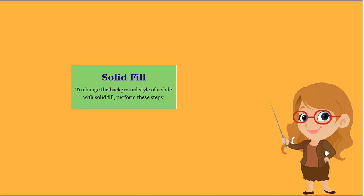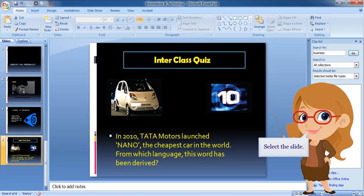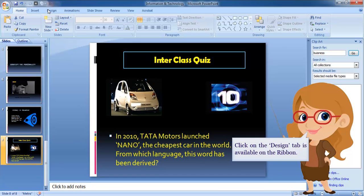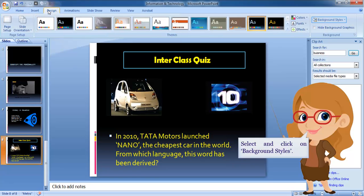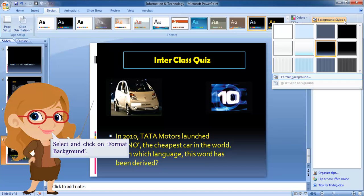Solid fill. To change the background style of a slide with solid fill, perform these steps. Select the slide. Click on the Design tab available on the ribbon. Select and click on Background Styles, then select and click on Format Background.